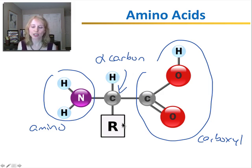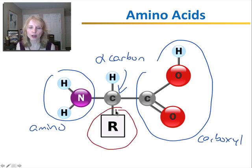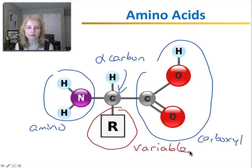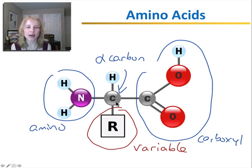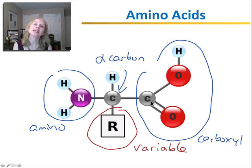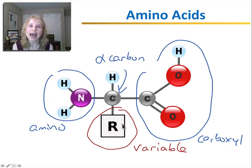On the other end of the alpha carbon is the very important R group, also called the variable group. The variable group, as the name suggests, varies among different amino acids. All amino acids have the amino group, the alpha carbon, and the carboxyl group — this is the same for all amino acids. But different amino acids will have different variable groups, and what atoms or groups of atoms make up the variable group will determine the function and properties of the amino acid.